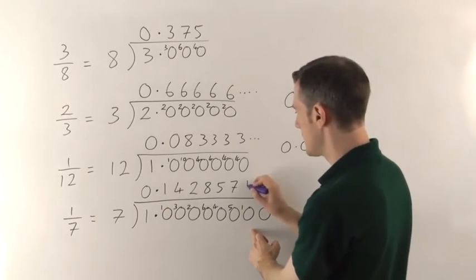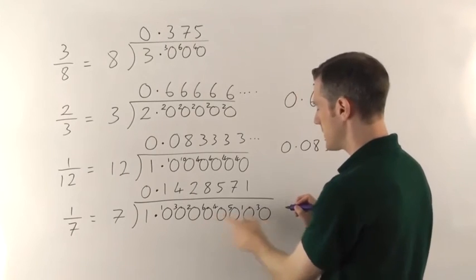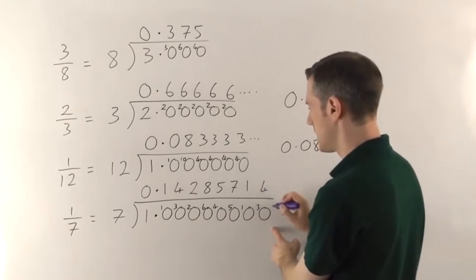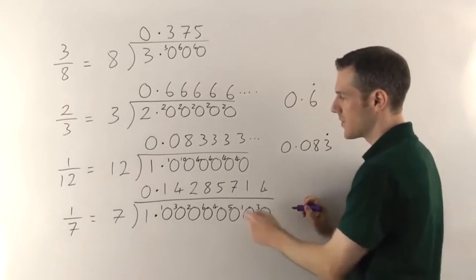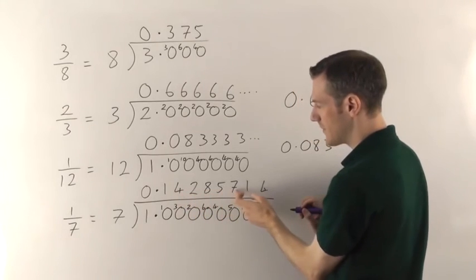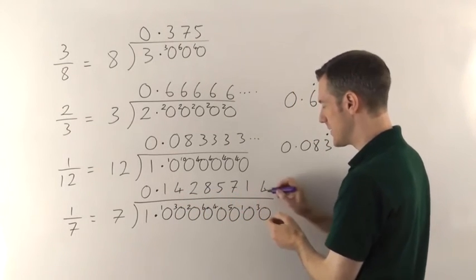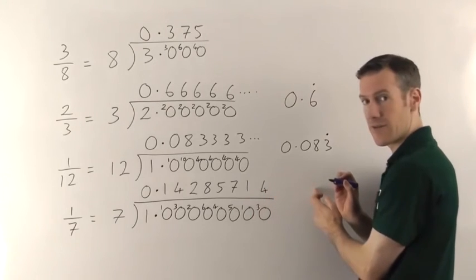So 7s into 10 go once. Remainder 3. 7s into 30 will go 4 times. Remainder 2 etc. But this 142857 that we've got here is then going to be repeated.